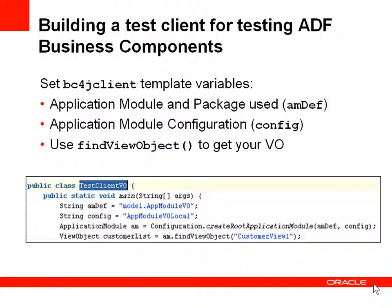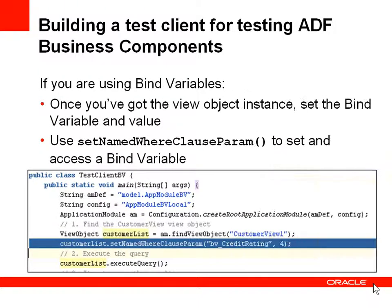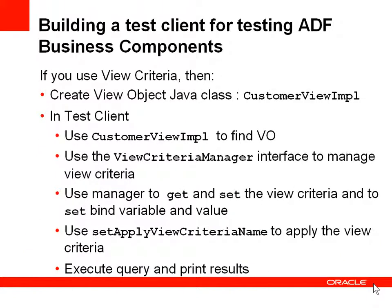Once you've defined all these, then you just go ahead and write the code that you want to modify the rows. If you're going to use bind variables, you'll define that bind variable and its value in a setNamedWhereClauseParam. Once you've defined that, it goes ahead and executes the query like it normally does.